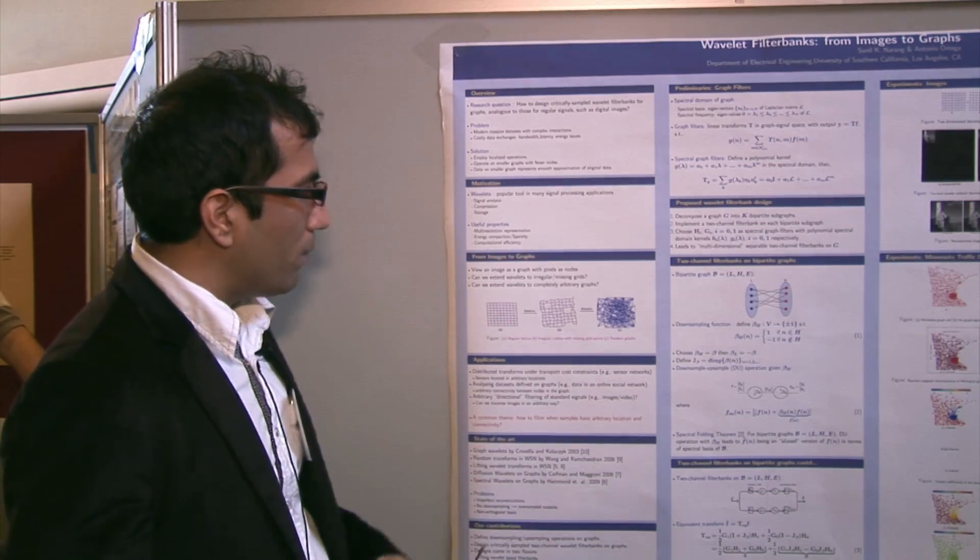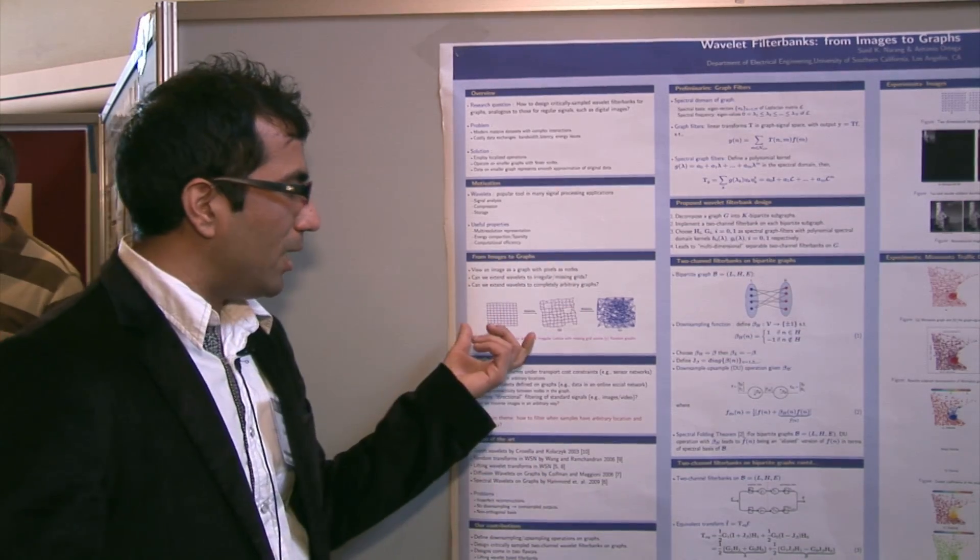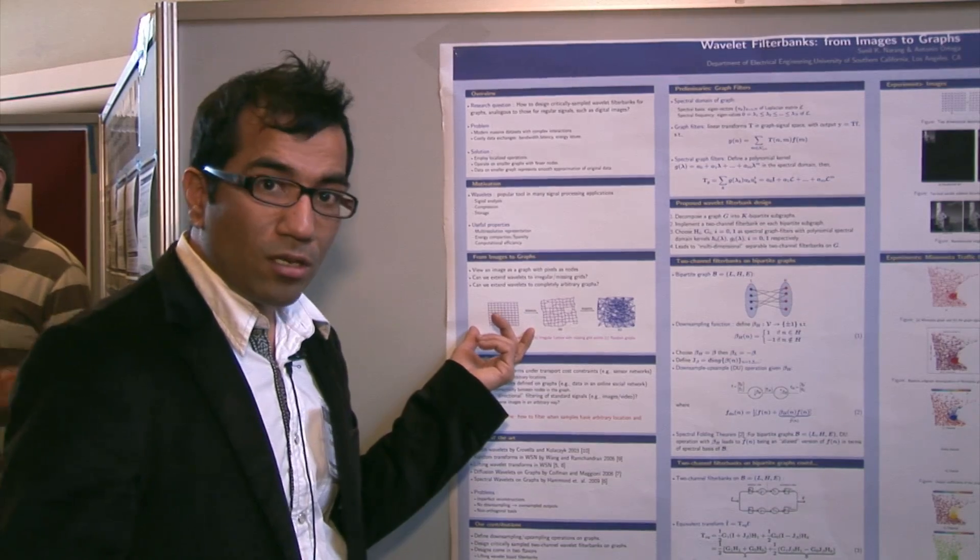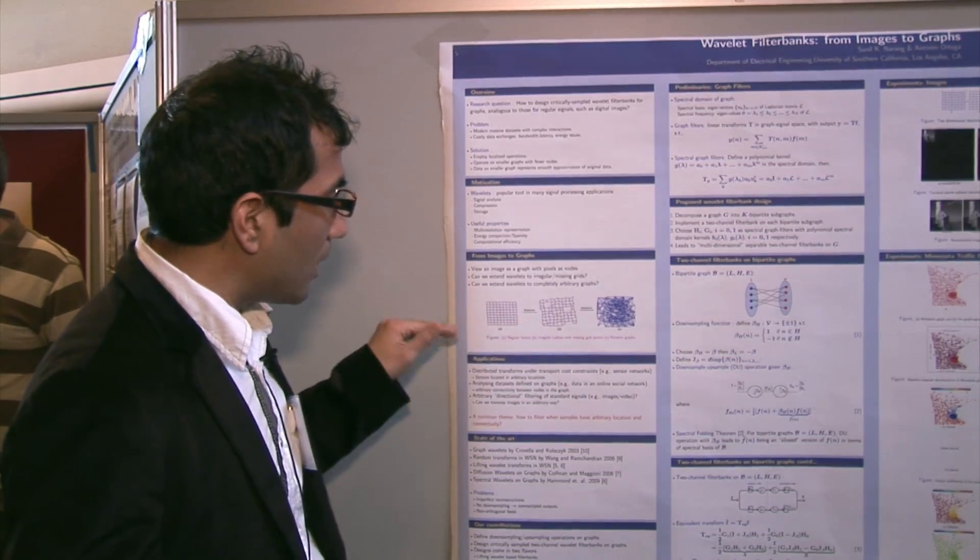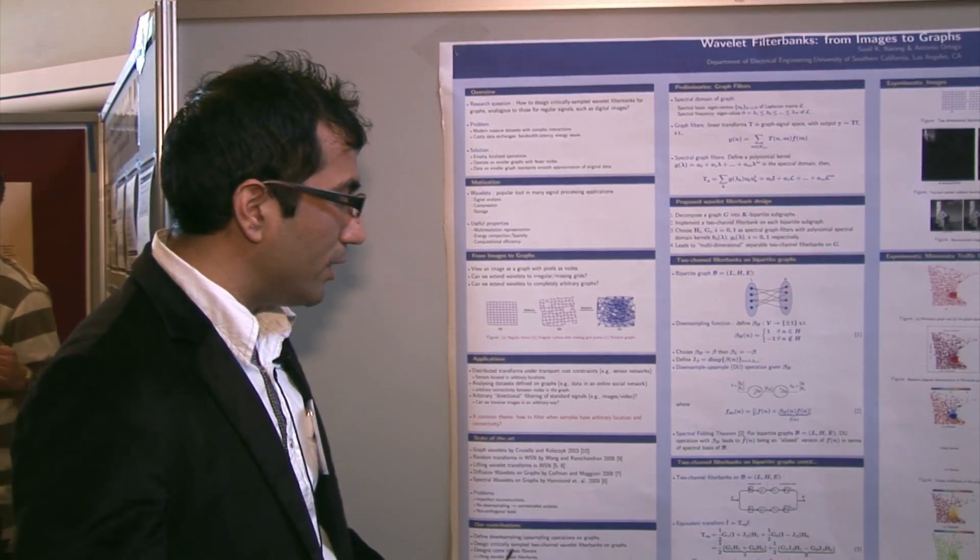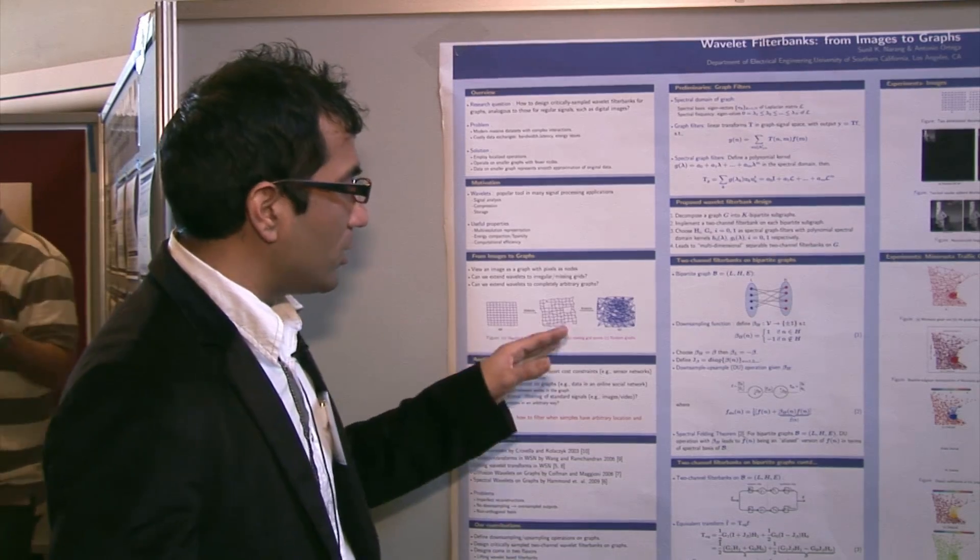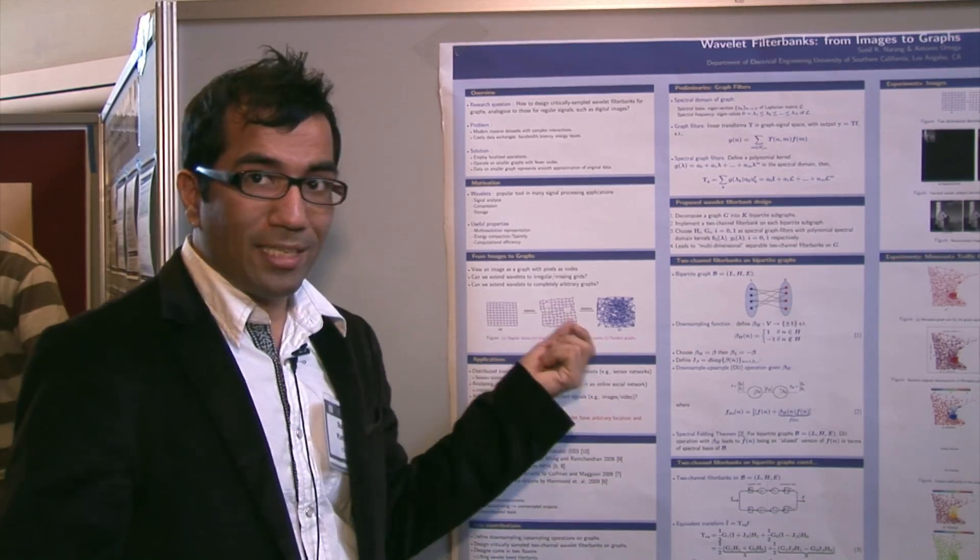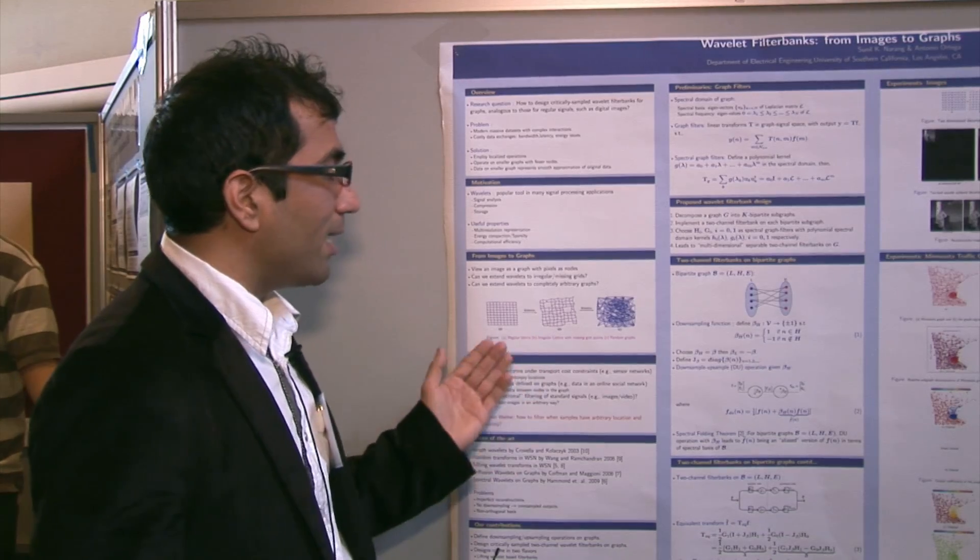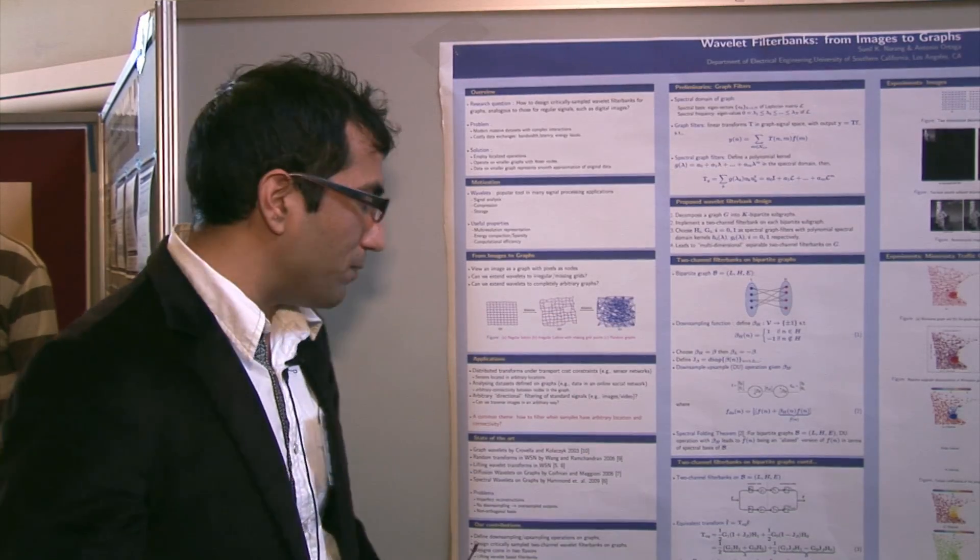This is how we proceed from images to graphs. We first treat images as four connected graphs, where NWSC neighbors are connected together. Then we ask the question, can we extend them to irregular grids with missing samples? And if we can, then can we extend them to completely arbitrary graphs?